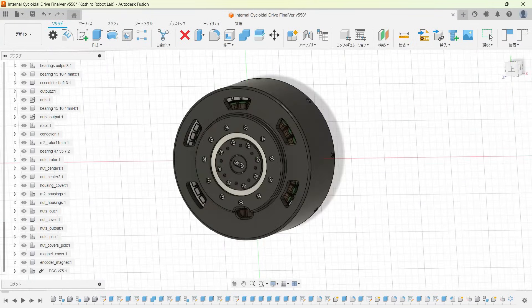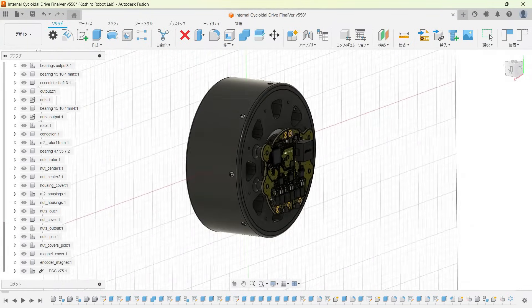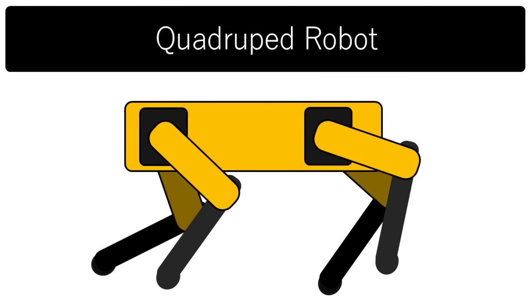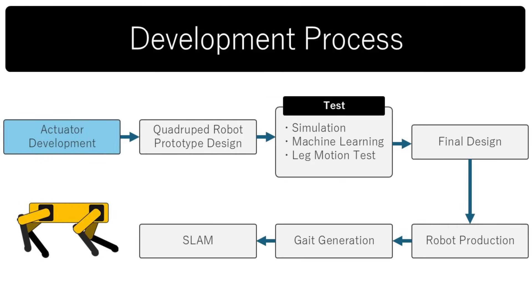I decided to develop this internal cycloidal drive because I wanted to build a quadruped robot. Over the next six months, I plan to create a quadruped robot to sharpen my technical skills and I'll be sharing the process on this channel. This video focuses on the hardware side of the actuator specifically for such a robot.